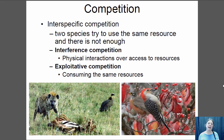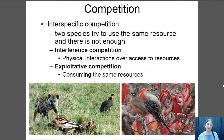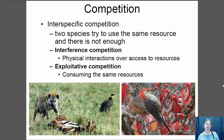Interspecific competition is competition between two species where both are trying to use the same resource and there's not enough to go around. You can have two types: interference competition, where there's a physical interaction over a resource — for example, a hyena chasing away a vulture from a carcass. You can also have exploitative competition, where two species use the same resources but at different rates. For example, a woodpecker eating berries faster than a robin, monopolizing more of those resources.